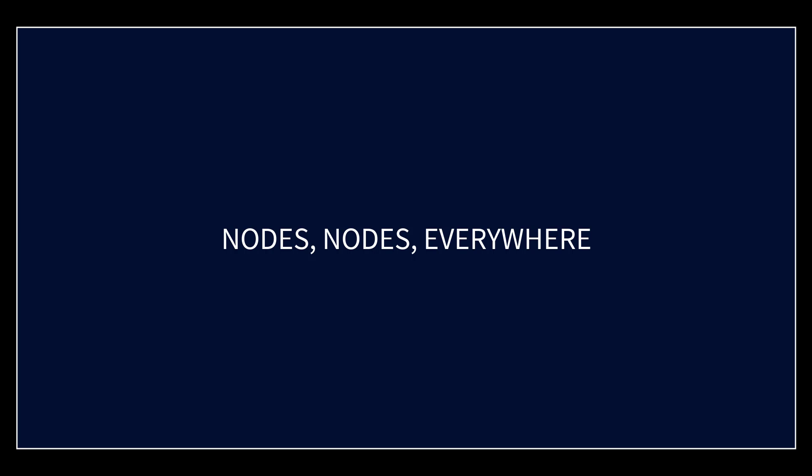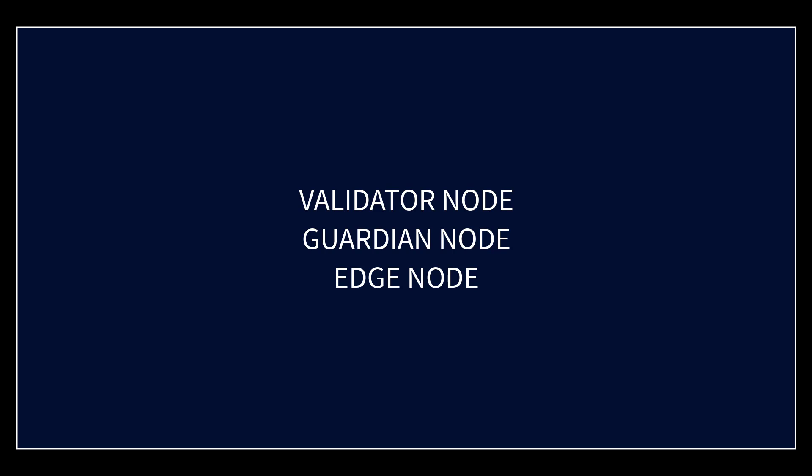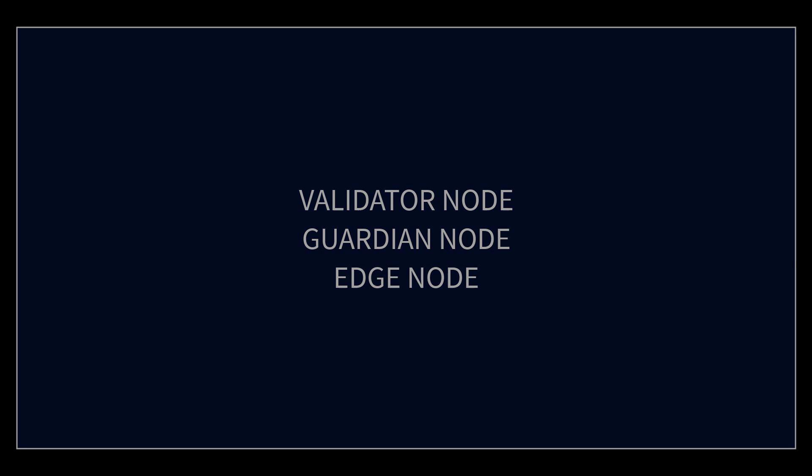In this video I'm going to go over the three types of nodes on the Theta Network — the validator, the guardian, and the edge — and explain what each one does briefly.